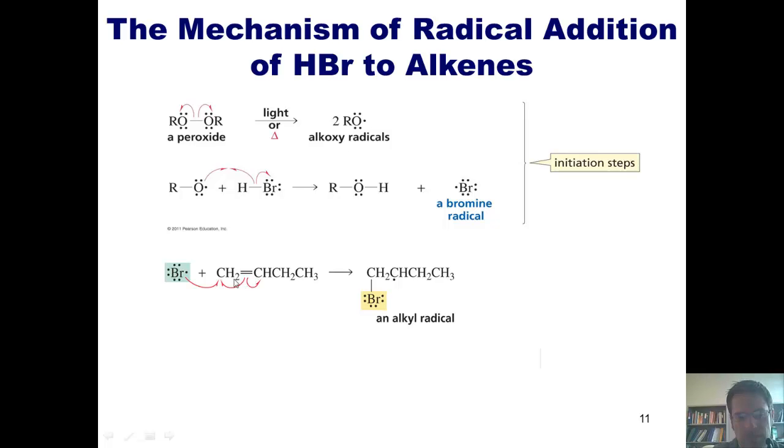My bromine radical comes in and reacts radically with the pi electrons in this carbon-carbon double bond. As it does so, it's going to form a bond with the external carbon because it places a radical on the internal carbon, which is the more stable location for a radical.